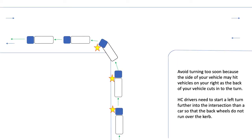Avoid turning too soon, because the side of your vehicle may hit vehicles on your right as the back of your vehicle cuts into the turn — it could be a curb, a pole, a sign, a tree. HC drivers need to start the left turn further into the intersection than a car so that the back wheels do not run over the curb, as shown in the diagram.